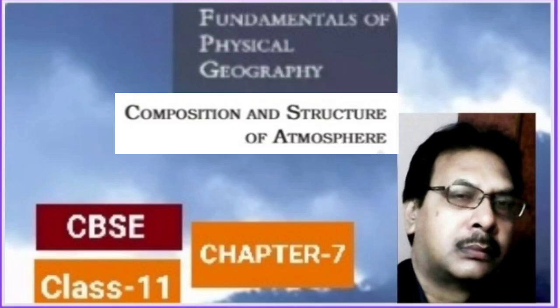Neon, helium, krypton, xenon, and hydrogen are also present in small amounts and are all called rare gases of the atmosphere. Out of the total volume of the atmosphere, 99% of the total mass of the atmosphere is confined only up to a height of 32 km.